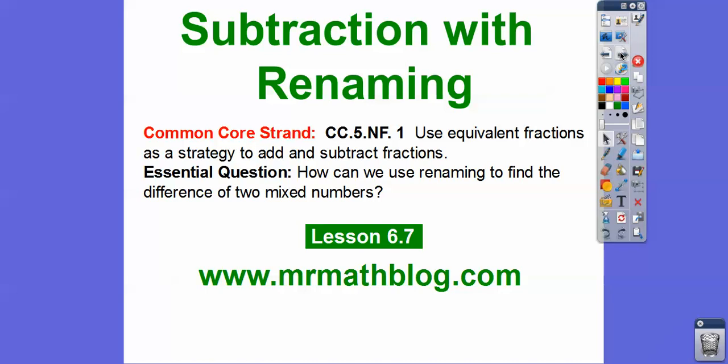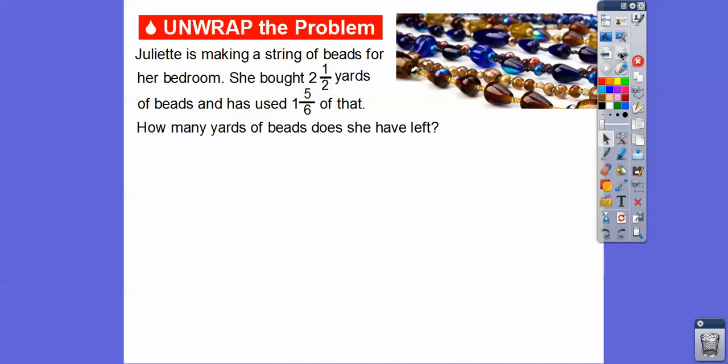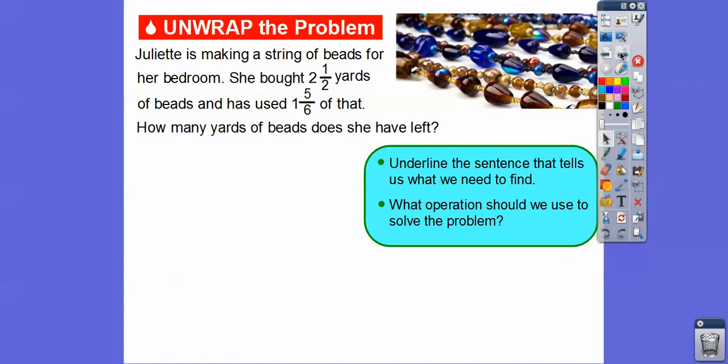There's our common core strand. Our question is: how can we use renaming to find the difference of two mixed numbers? Here's an example. Juliet is making a string of beads for her bedroom. She bought two and a half yards of beads and has used one and five-sixths of that. So how many yards of beads does she have left? We need to figure out how much she has left.